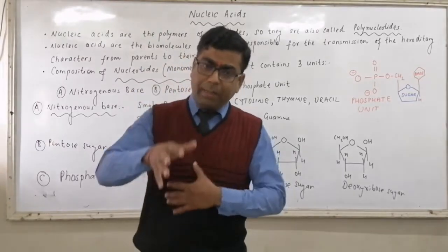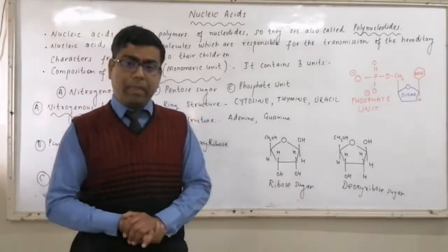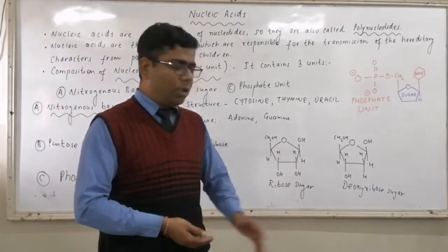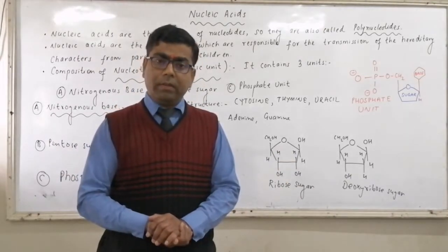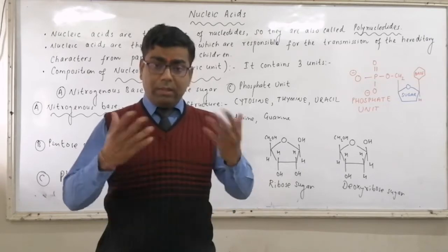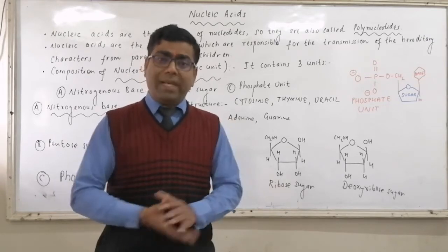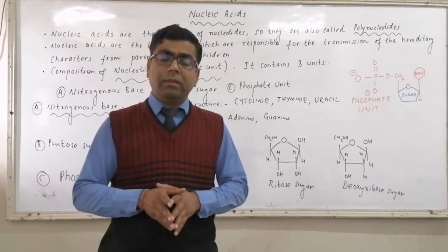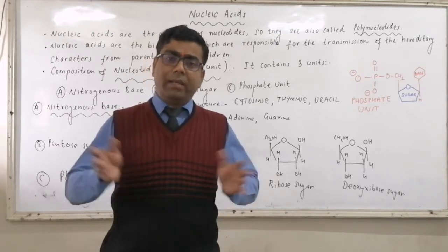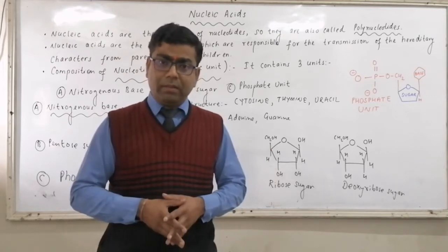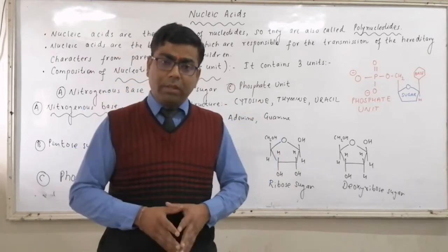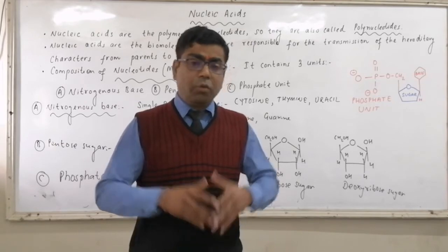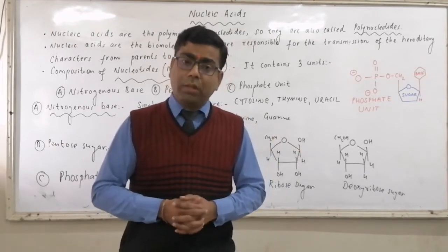In RNA, ribose sugar is used, while in DNA, deoxyribose sugar is used. From the type of pentose sugar present, RNA and DNA have got their names: RNA stands for ribonucleic acid, and DNA is the nucleic acid which contains deoxyribose sugar.